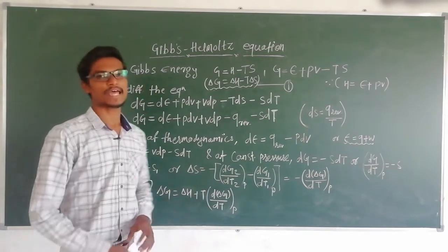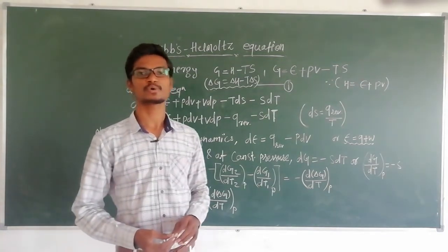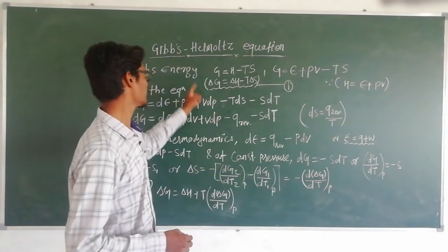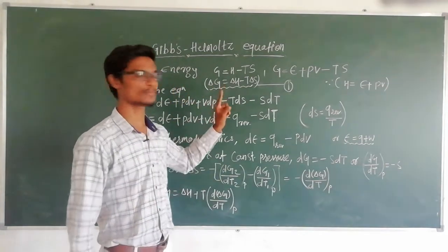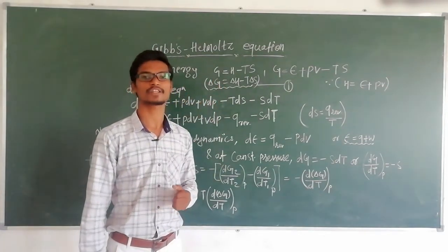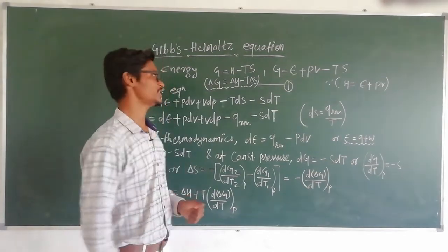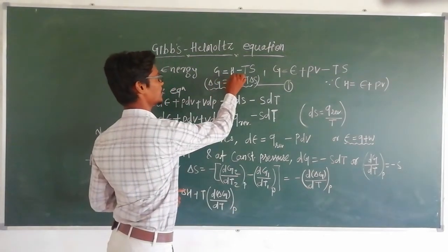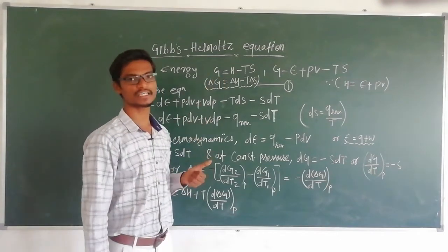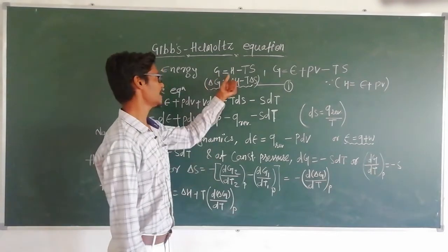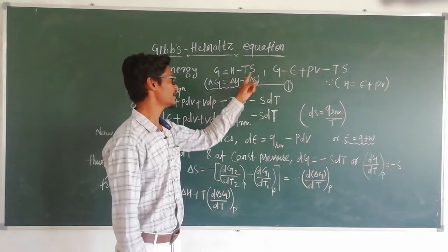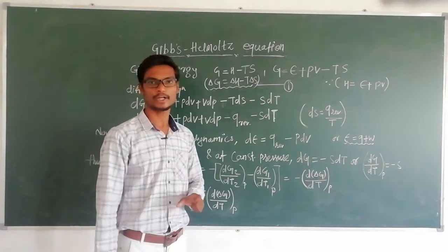The Gibbs energy is denoted by the symbol capital G, and the formula for the Gibbs energy is G is equal to H minus TS, where G is the Gibbs energy, H is the enthalpy, T is the temperature, and S is the entropy.